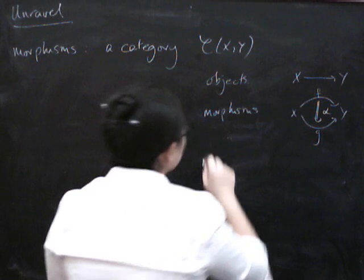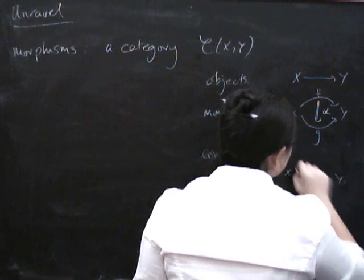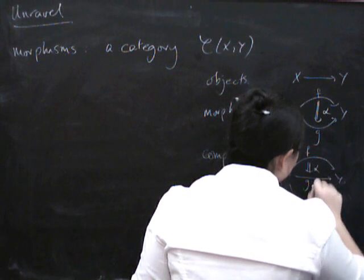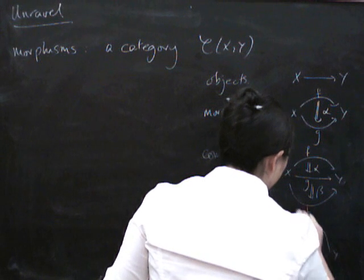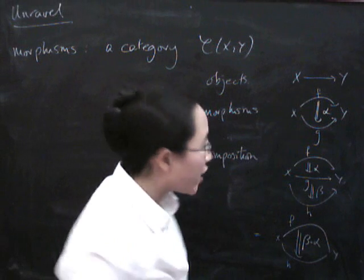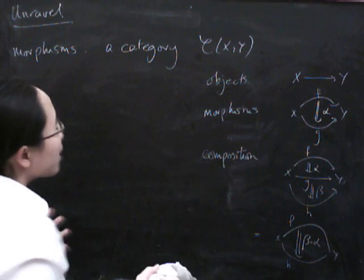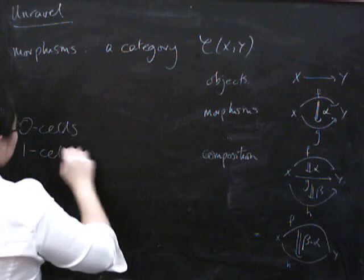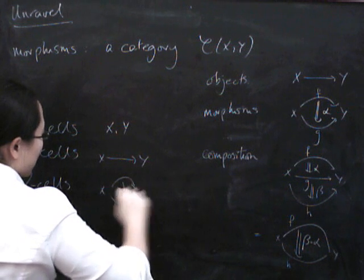Since this is a category, it has composition as well. If we've got a morphism from f to g in the hom-category, and another one from g to h, so they're composable, we get a composite going all the way from f to h — this is called beta composed with alpha. This is what we're going to call vertical composition, because we're actually going to have a composition in the other direction as well. So we've now discovered that we've got zero-cells (what we used to call objects), one-cells going from X to Y, and two-cells going in between one-cells.